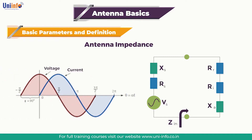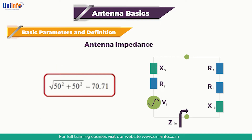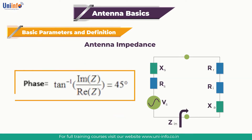If the impedance is entirely imaginary, say Z equals 0 plus j times 50, then the voltage leads the current by 90 degrees in phase. If Z equals 50 plus j times 50, then the impedance has a magnitude equal to the square root of 50 squared plus 50 squared, which equals 70.7. The phase will be 45 degrees, meaning the current will lag the voltage by 45 degrees.